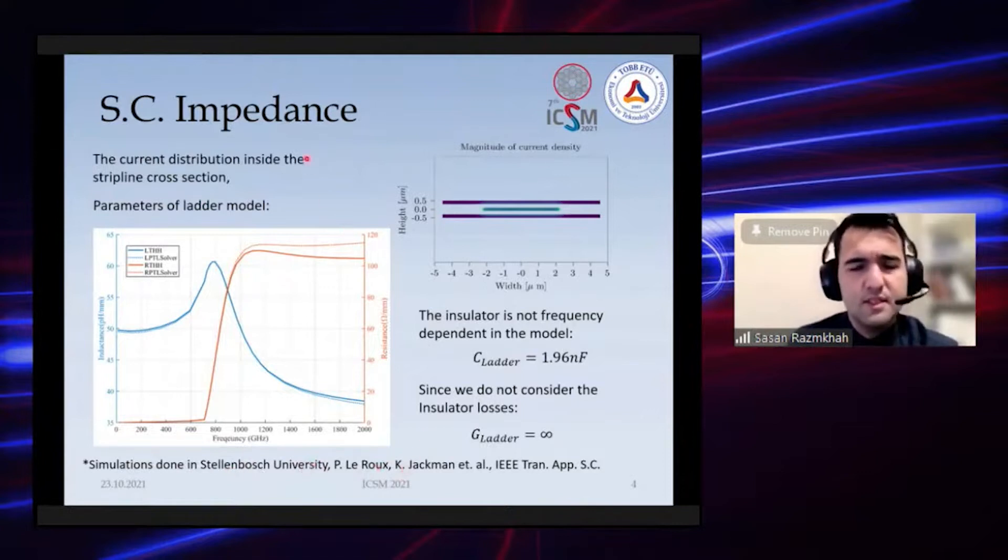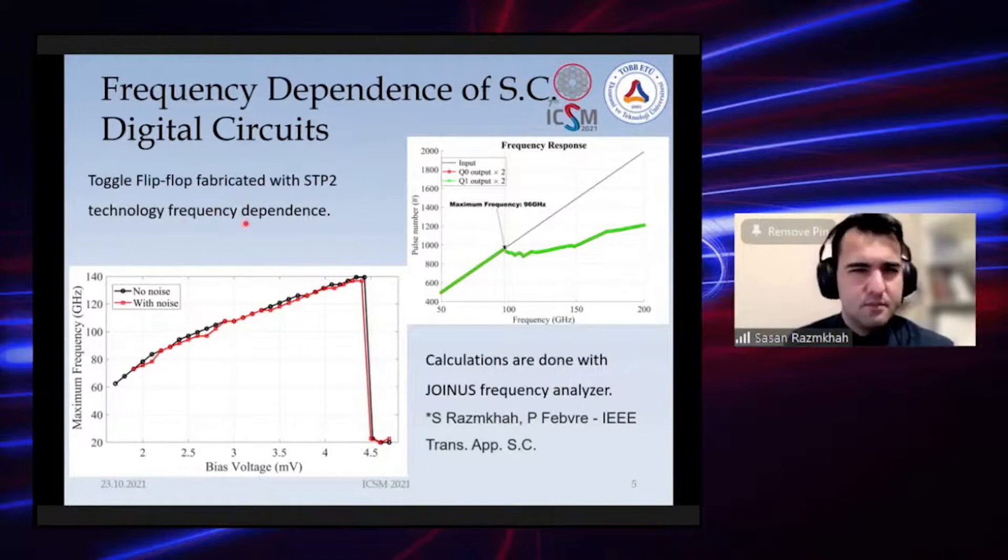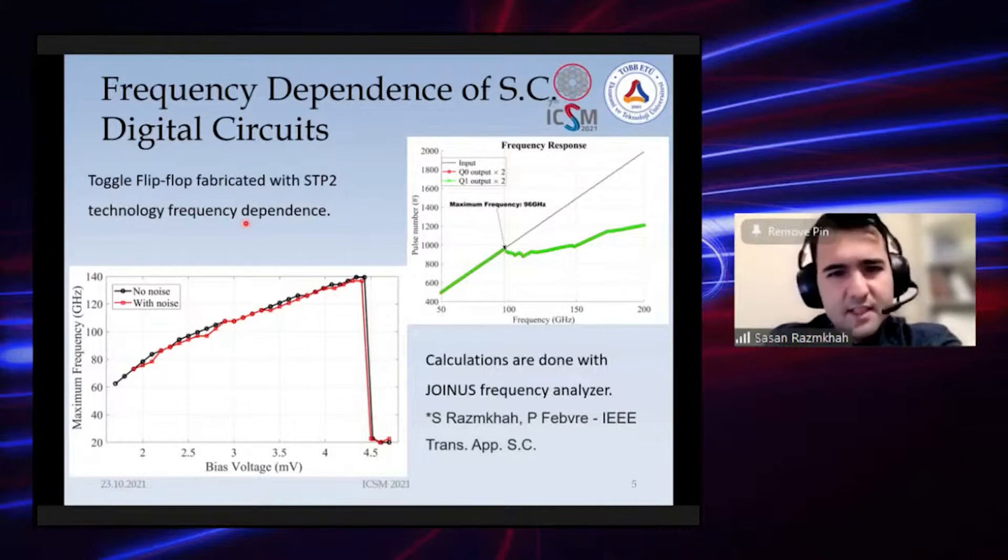We've also done calculations on superconductor digital circuits. This is the SFQ TFF circuit made by STP-2 technology, which is a technology from Tokyo AIST. This is not a very fast technology.